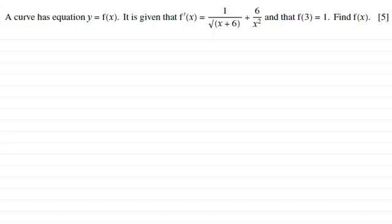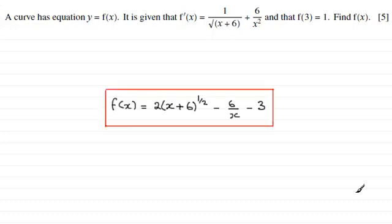Okay welcome back if you had a go. Now the answer to this is that f of x equals 2 times x plus 6 to the power half minus 6 over x minus 3. So if you didn't get that and want to see how it's done I'll just take you through the answer.